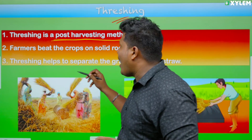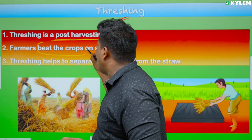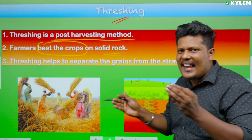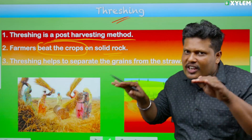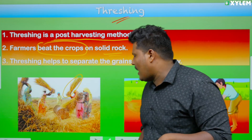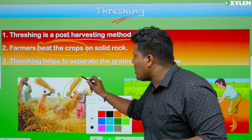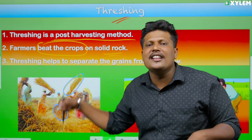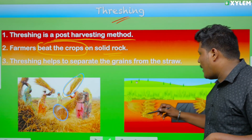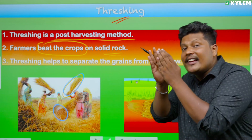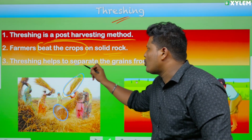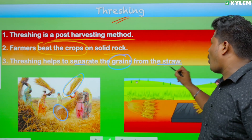In threshing, what the farmer does is beat the crop on a solid rock, or on the threshing floor — the crop is beaten on a solid rock. A drum can also be used. Threshing helps to separate grains from the straw. Straw will be separated off.